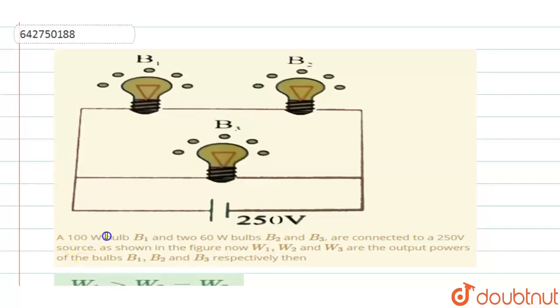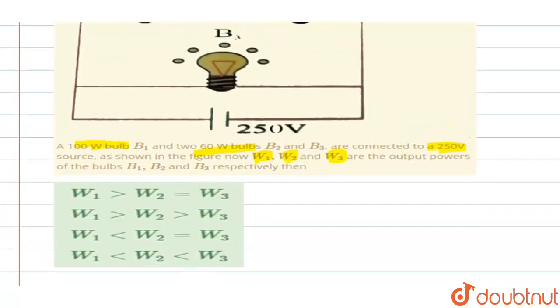A 100 Watt bulb and 260 Watt bulbs are connected to a 250 V source as shown in the figure. W1, W2 and W3 are output powers of the bulbs B1, B2 and B3. Then, you have to derive the relation between W1, W2 and W3.